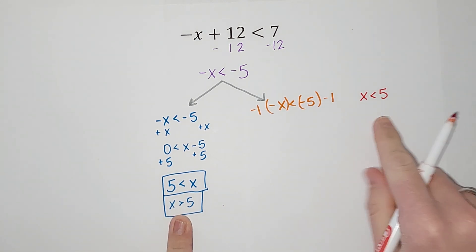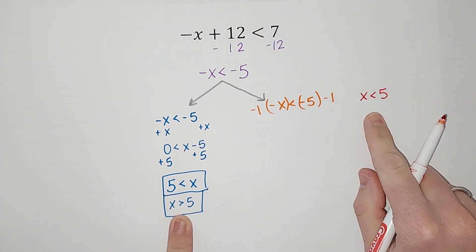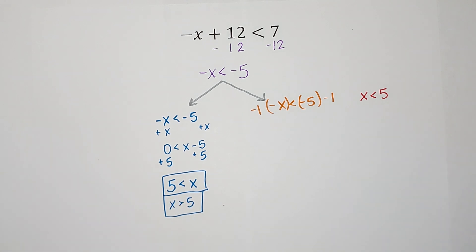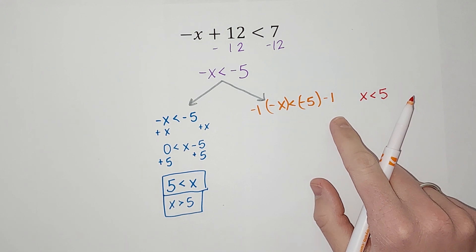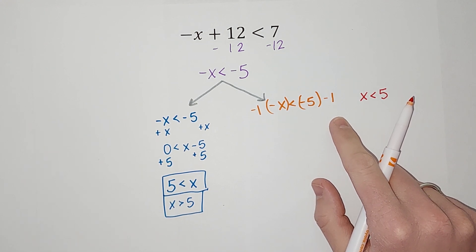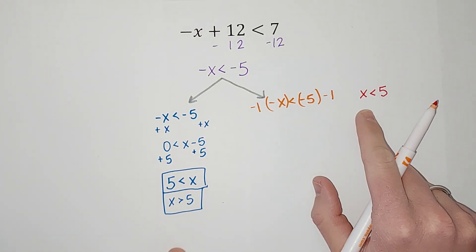But look, that does not match up. Right? So somebody smarter than me in math land figured out, well, if we multiply or divide by negative 1, which we should be able to do, we end up with a different answer.